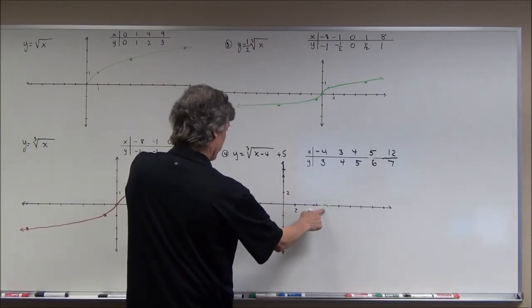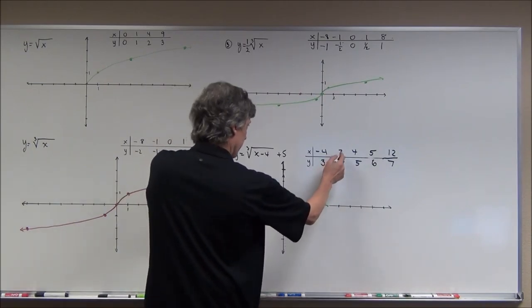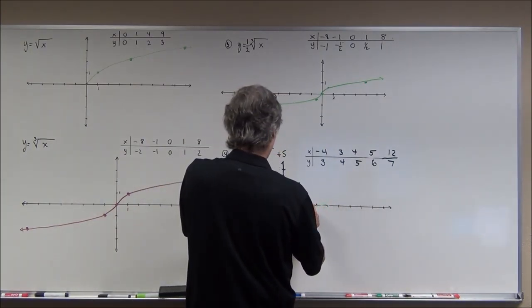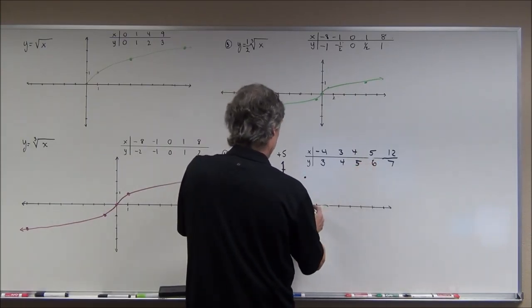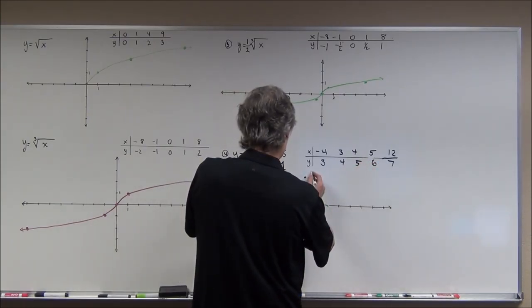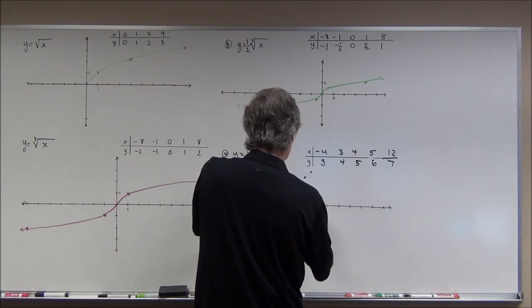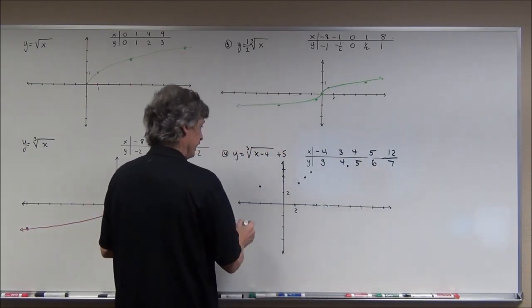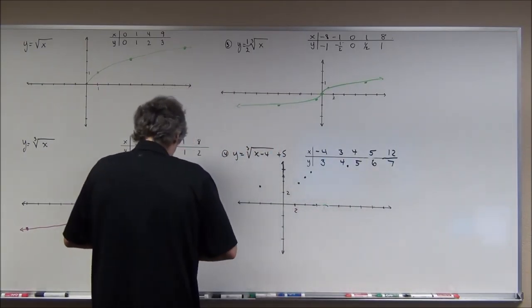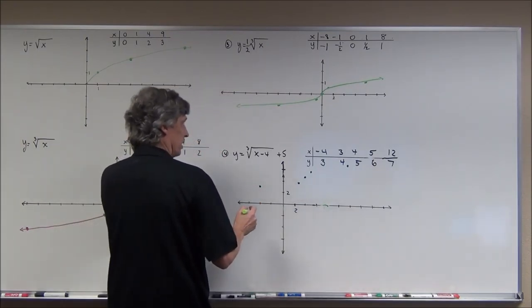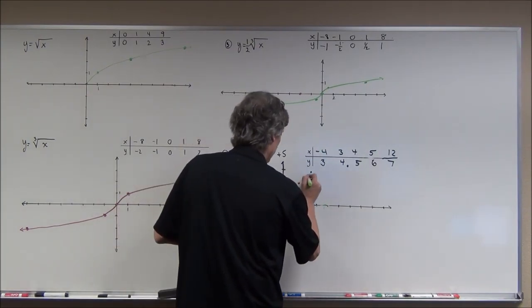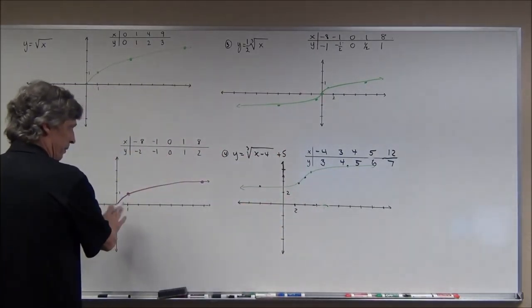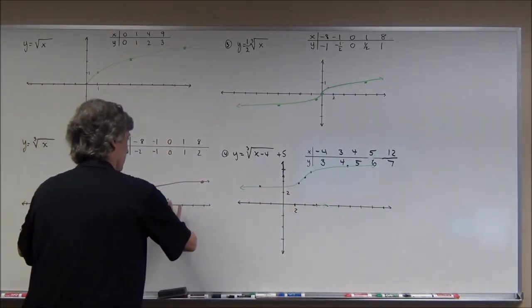Graphing those points with tick marks worth 2: (−4, 3), (3, 4), (4, 5), (5, 6), and (12, 7). The shape is the same as the parent cube root but shifted to the right and upward. Look at those five key points — the graph has been translated right 4 and up 5.